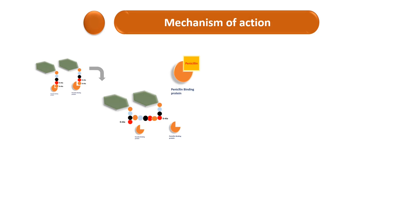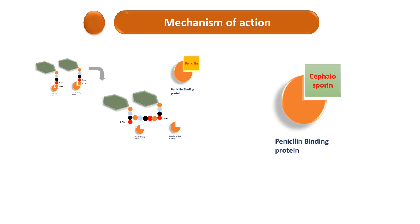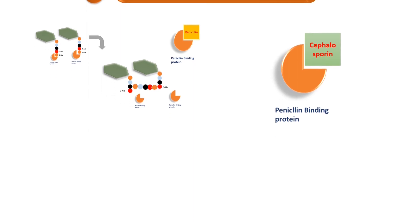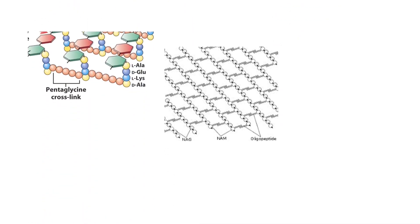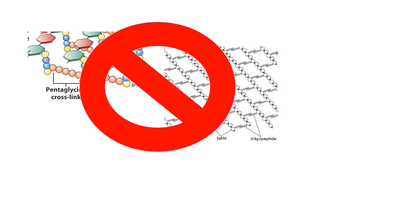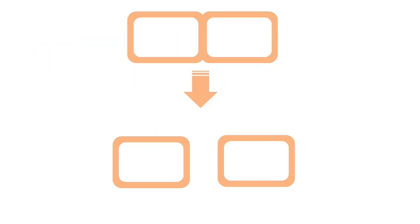Now let's talk about the mechanism of action of cephalosporins. Like penicillin, cephalosporins have a beta-lactam ring, so their mode of action is similar to penicillin. Cephalosporins act by inhibiting the transpeptidation reaction. This inhibition prevents the formation of peptidoglycan, which plays an important role in maintaining cellular integrity.